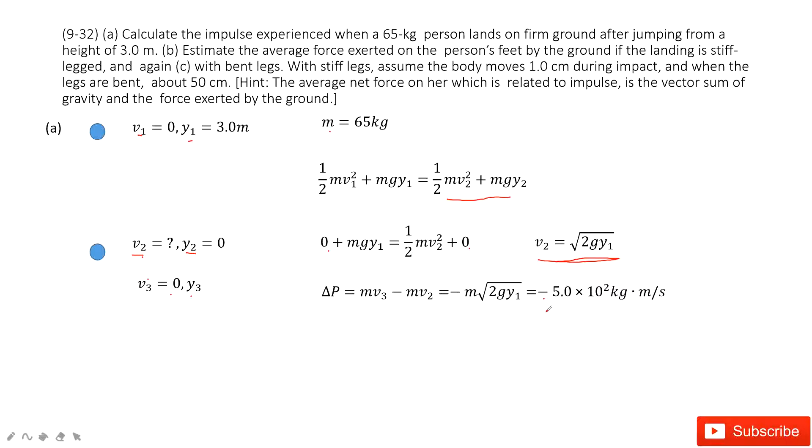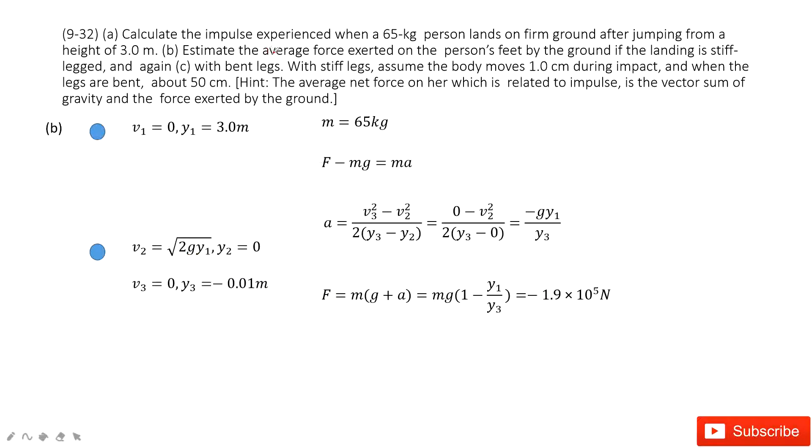This negative sign tells us the direction of this velocity change, right? And it is just the direction for the impulse. The second one tells us if the landing is stiff-legged.